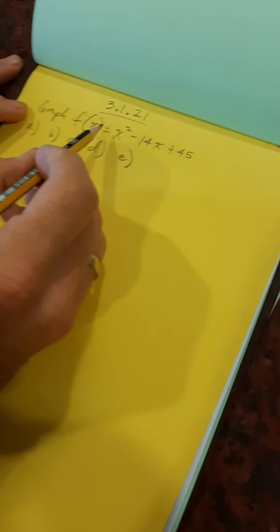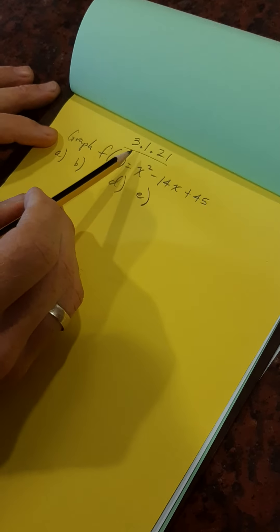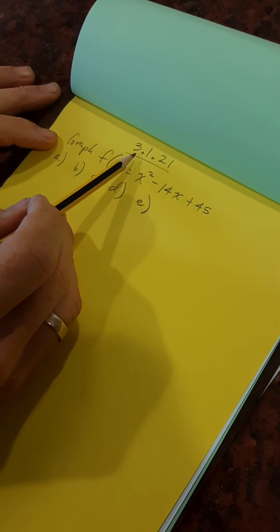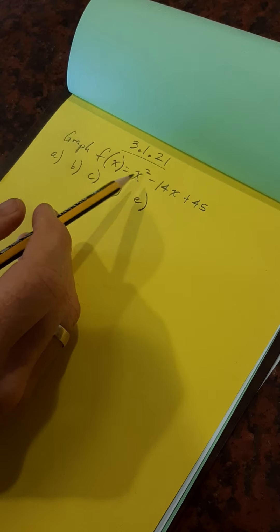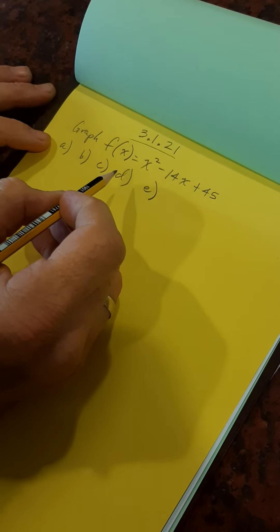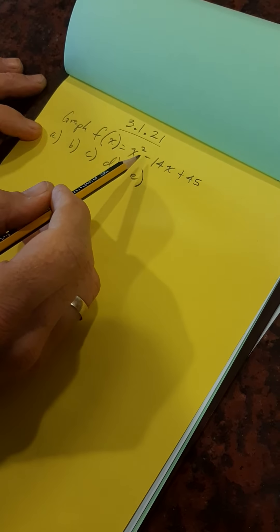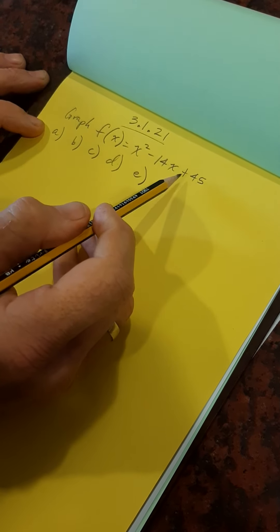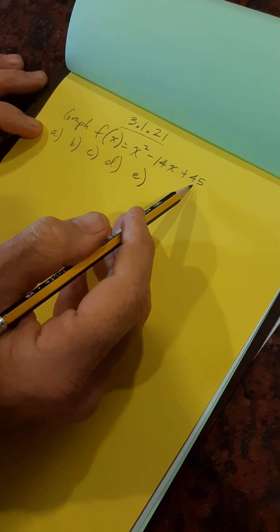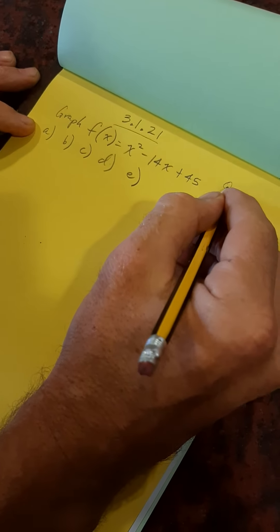I hope you have a cup of tea or coffee in hand. This is really, we're getting down to it right here. 3.1.21. You can hear my coffee maker in the background there. Graph f of x equals x squared minus 14x plus 45. This is quadratic form.